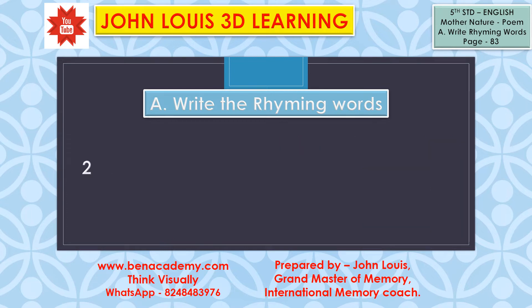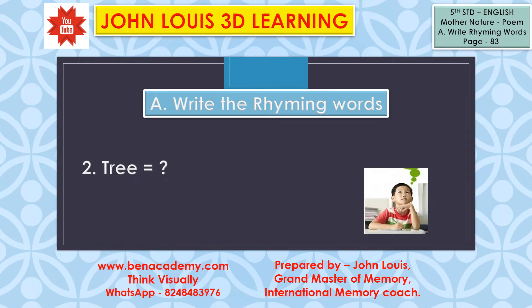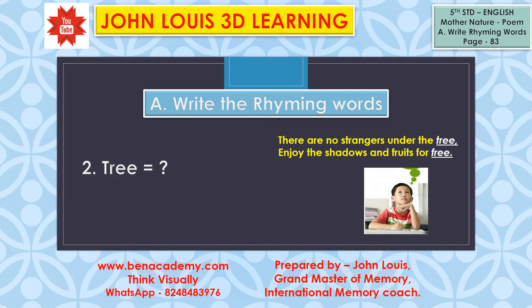What is the next word? Tree. What is the rhyming word we used in the Mother Nature poem for tree? Try to think of the third and fourth lines — try to recite them. There are no strangers under the tree. Enjoy the shadows and fruits for free. Tree, free — it is rhyming. The answer is free.